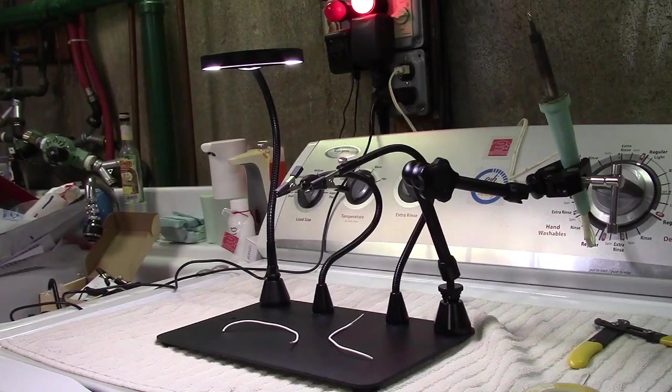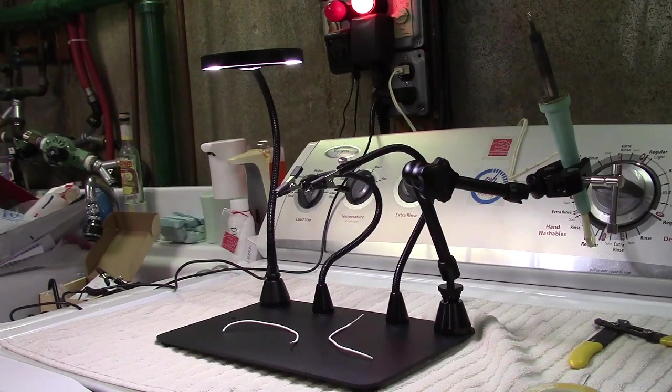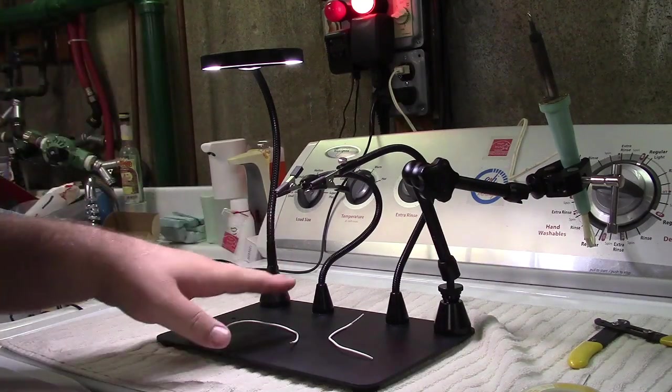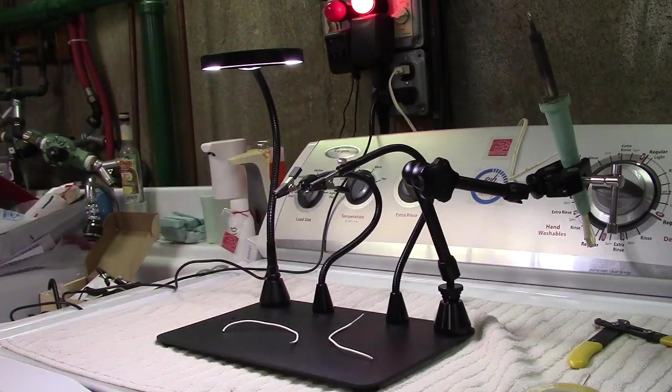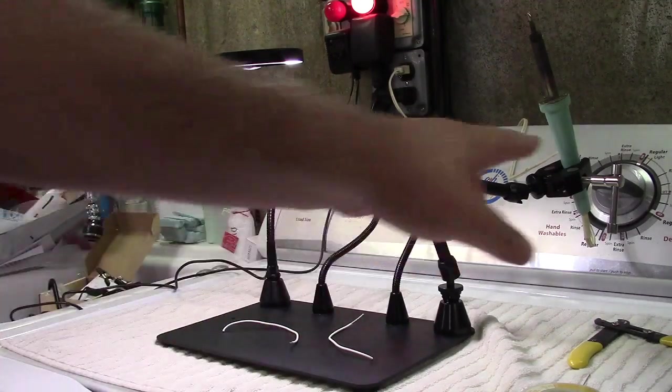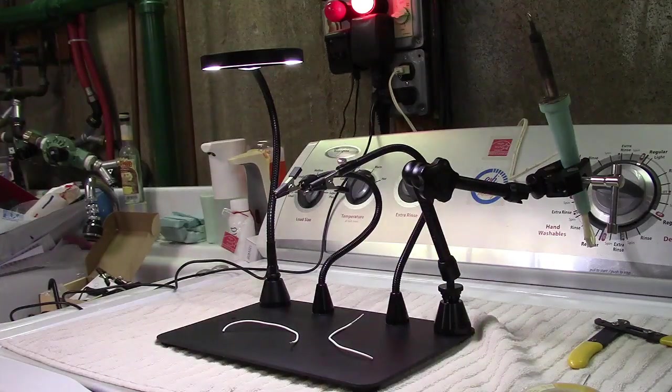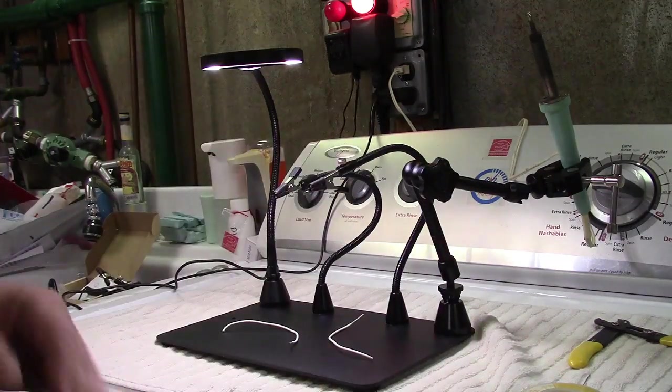Okay, so here would be a typical setup that you would have. So I have the light here. I have that on. Two alligator clips on the goosenecks like that. The holder for the soldering iron, soldering iron is heating up right now.